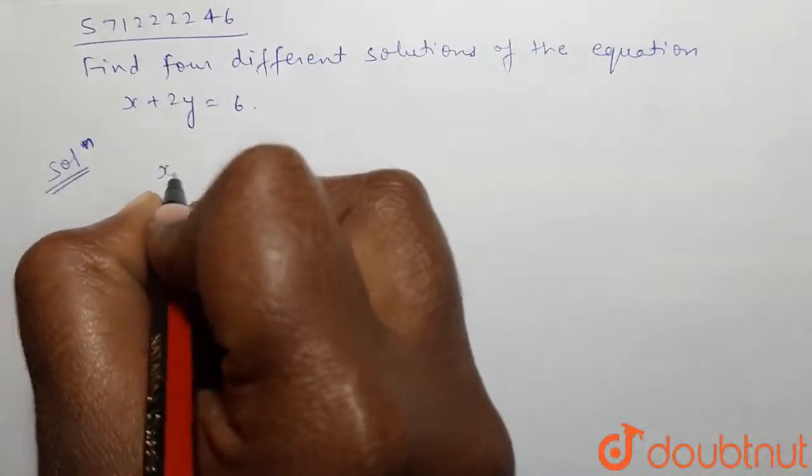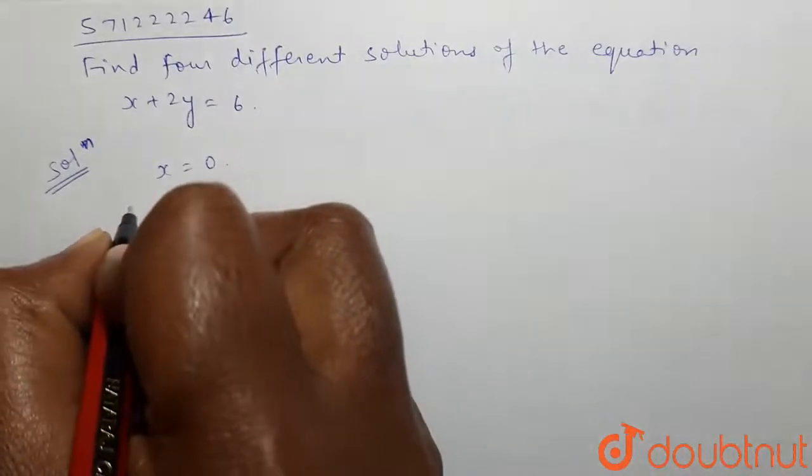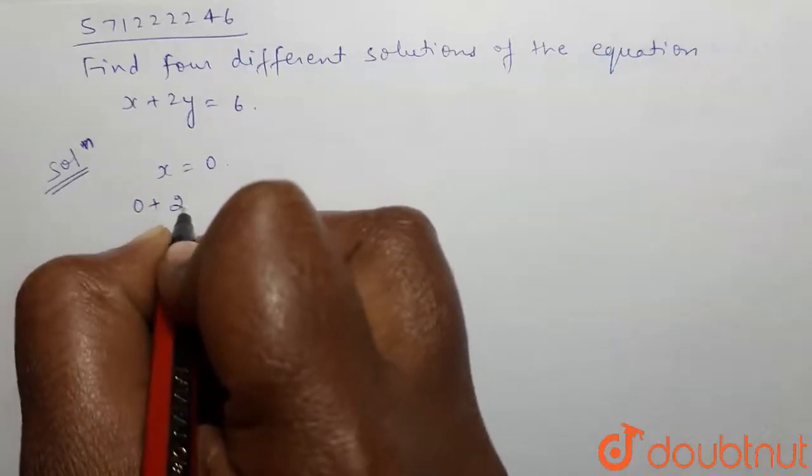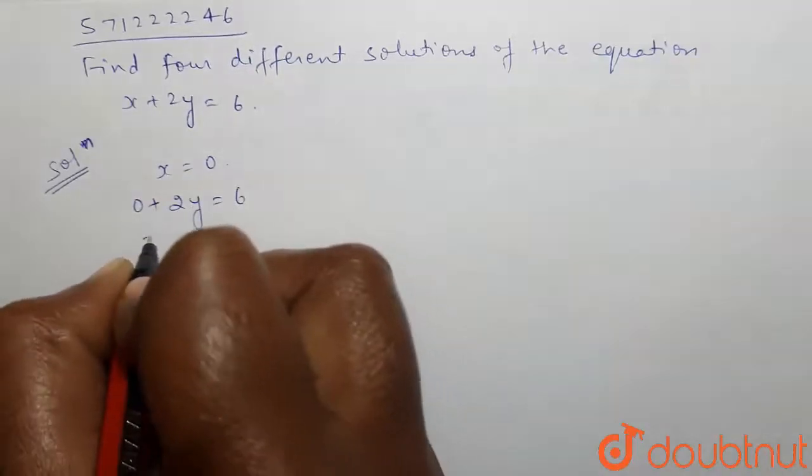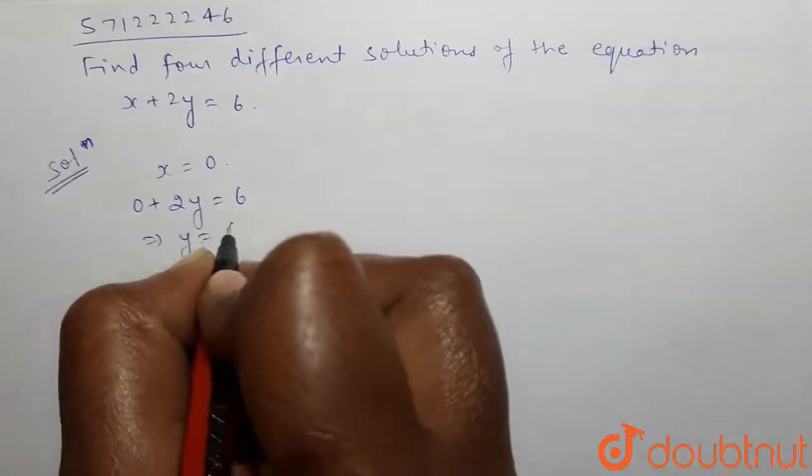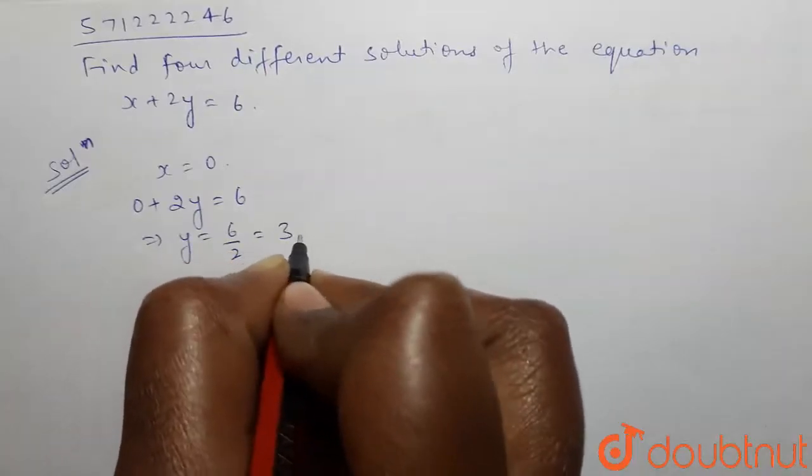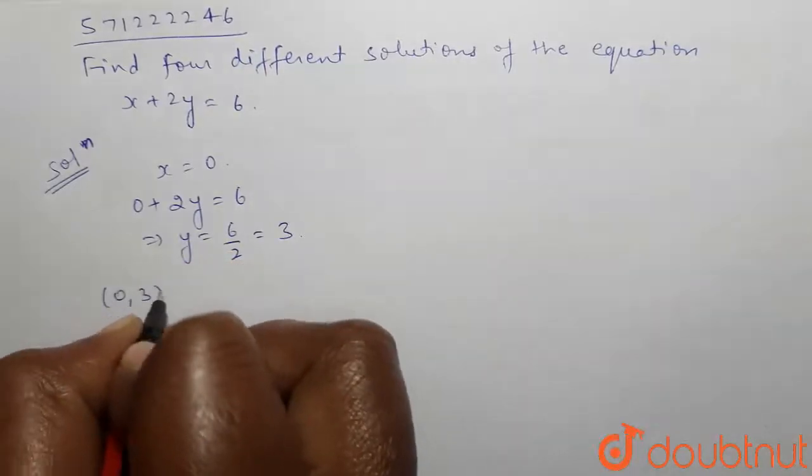First, put x equals to 0. Then the equation will be 0 plus 2y equals to 6, and this gives y equals to 6 by 2, that is 3. So, (0, 3) is a solution.